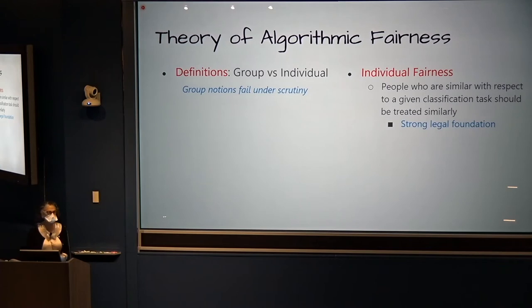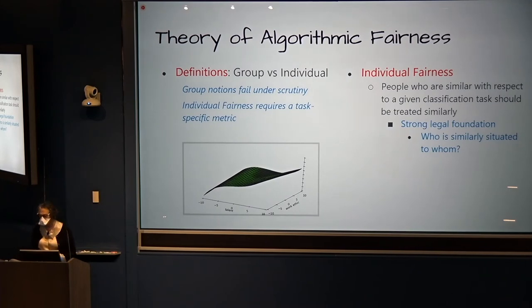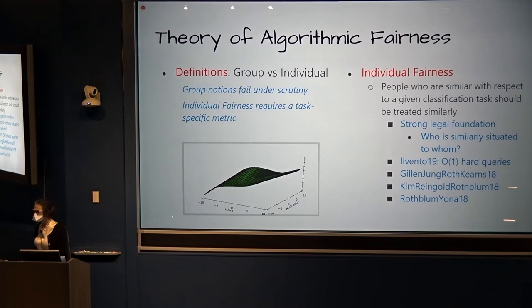This has a very strong legal foundation. The idea that similar people should be treated similarly is at the basis of anti-discrimination law. But you have this problem again. Who is similar to whom? How do you decide for a given task who is similar to whom? How do you define it? Where do you get your hands on a similarity metric that tells you for a given pair of individuals and a particular task how similar or dissimilar these two individuals are? That was a major stumbling block. But the community, after spinning its wheels for a while on this, did persist. And the last couple of years have shown some very nice results in making progress along these lines.